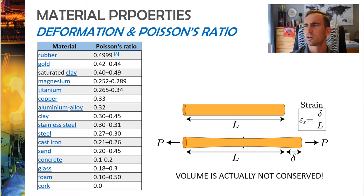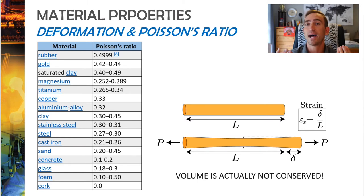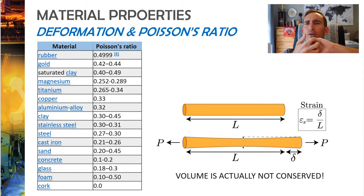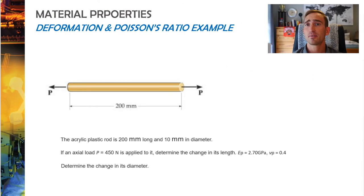It's very interesting to note that volume actually isn't conserved. If you did the math, the volume of material would not match what you had initially — because as you stretch the material, the molecules inside rearrange and actually tend to get denser. That's a pretty fun fact. Now let's look at an example of how we can apply Poisson's ratio to an ENES 102 problem.